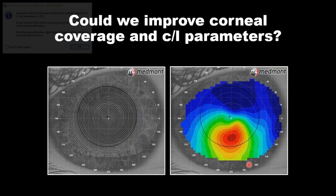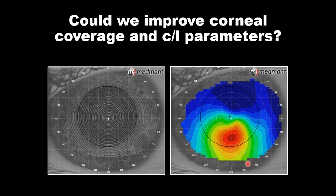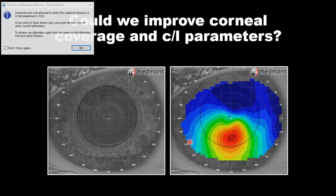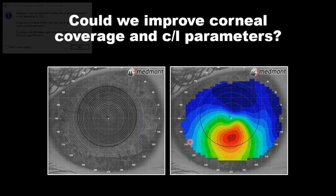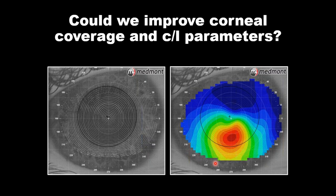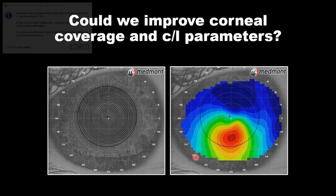One of the advantages of the Medmont is it has one of the largest areas of coverage of any of the Placido topographers, but in some irregular corneas, especially very steep corneas, we're going to miss some information — and that missing information is very valuable to us.